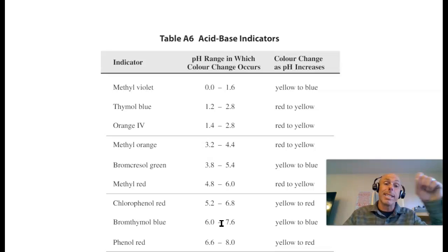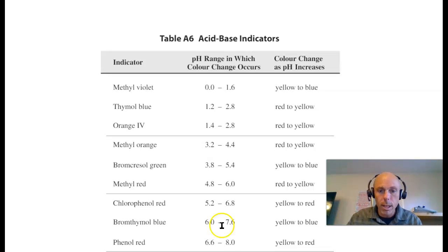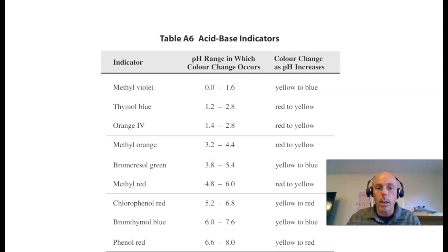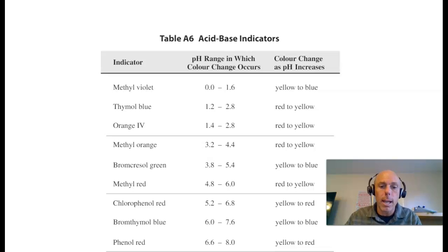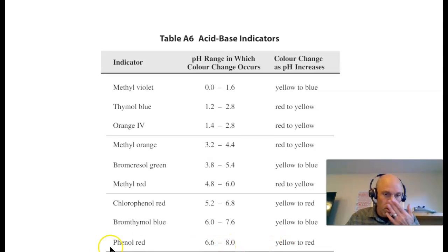When the pH is less than the pKa, it's in the acidic form — it's yellow. When the pH is above the pKa, it's in its basic form — in this case blue. If we were to do that for phenol red, averaging 6.6 and 8.0 gives us 7.3 as an estimate for phenol red's pKa. Below 7.3, it'd be yellow; above 7.3, it'd be red.